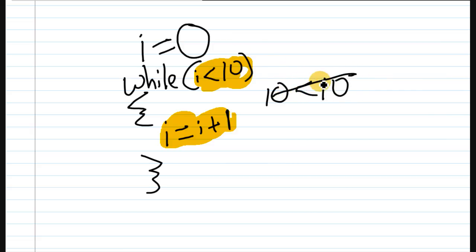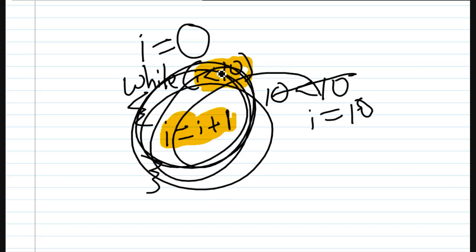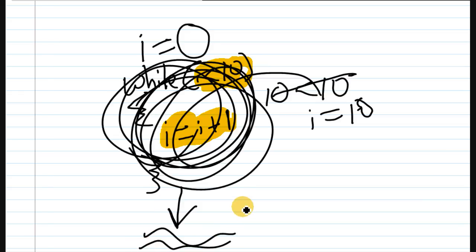So once it hits that, i stays equal to 10, i does not change, but because that expression that's highlighted right here is no longer true, the loop completely ends and the program moves onwards. So i is left equal to 10, the loop is no more, and whatever comes after it happens. That in short is pretty much what a while loop does.